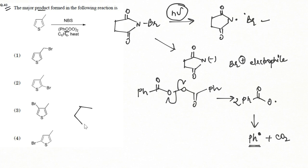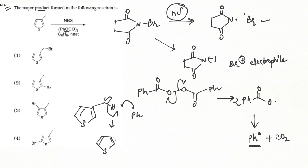In the thiophene derivative, the phenyl radical takes up a hydrogen from the allylic/benzylic position. The radical formed at that position is the most stable radical in the thiophene derivative because of resonance stabilization. Ultimately, the bromine radical from the homolytic cleavage of NBS reacts to give the brominated product.